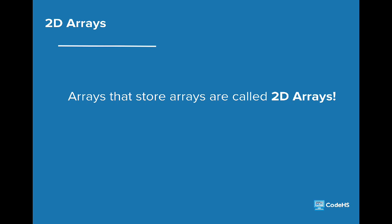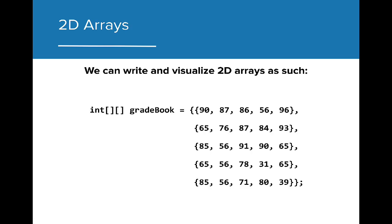Arrays that store other arrays are referred to as 2D arrays. We consider these 2D arrays because we can visualize and access them the same way we might a grid. Taking the exam scores data from the previous slide and writing them out as individual arrays, we can see that this data resembles a gradebook of sorts. The rows represent the different exams that students take, while the columns in this grid are the individual students in the gradebook.